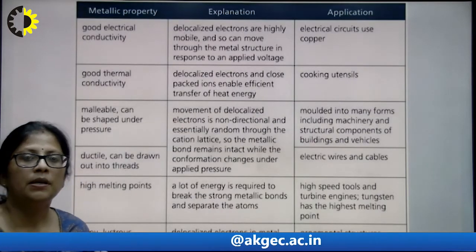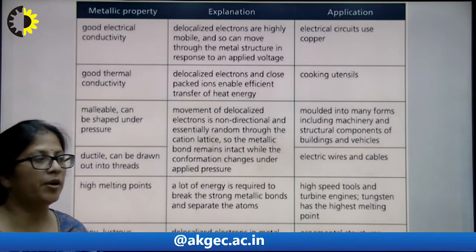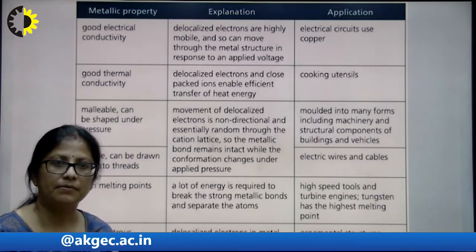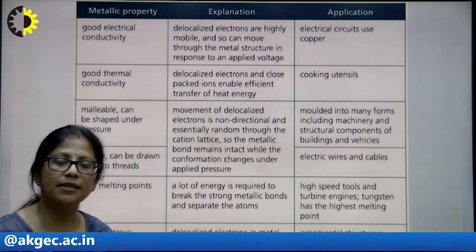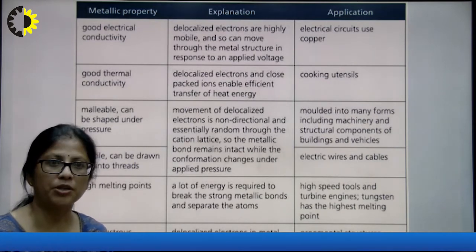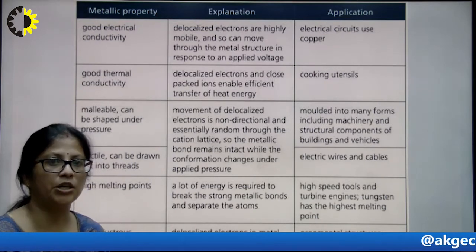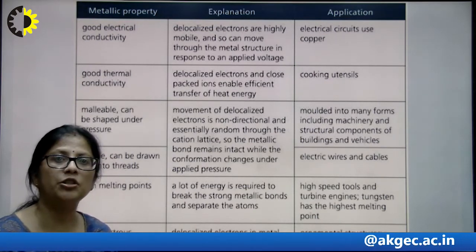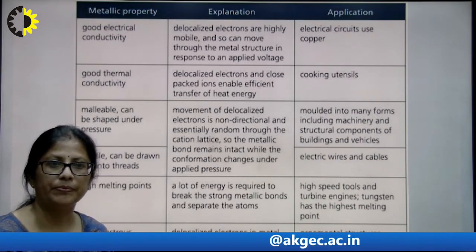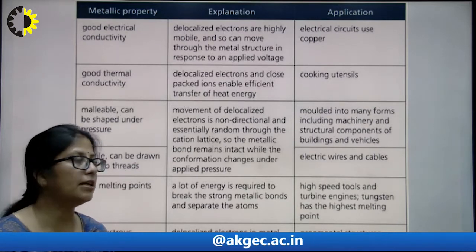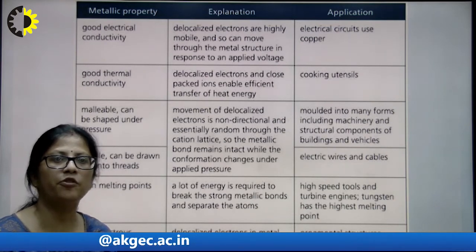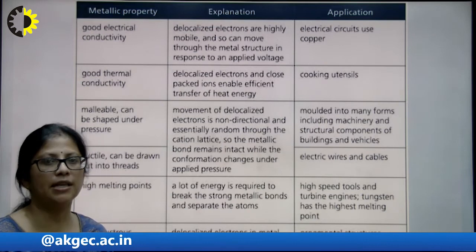Here are the different metallic properties, their explanations and applications. Good electrical conductivity is because the delocalized electrons are highly mobile and can move through the metal structure in response to the applied voltage. They find application in electrical circuits, for example in copper. Good thermal conductivity — the delocalized electrons and close-packed ions enable efficient transfer of heat energy. They are used in cooking utensils.